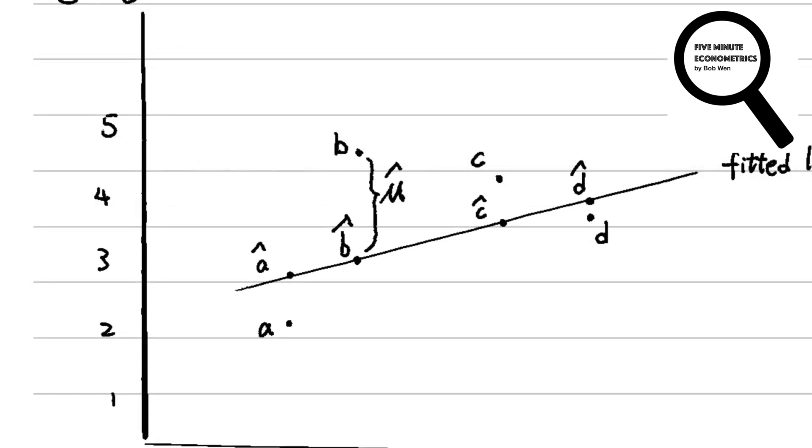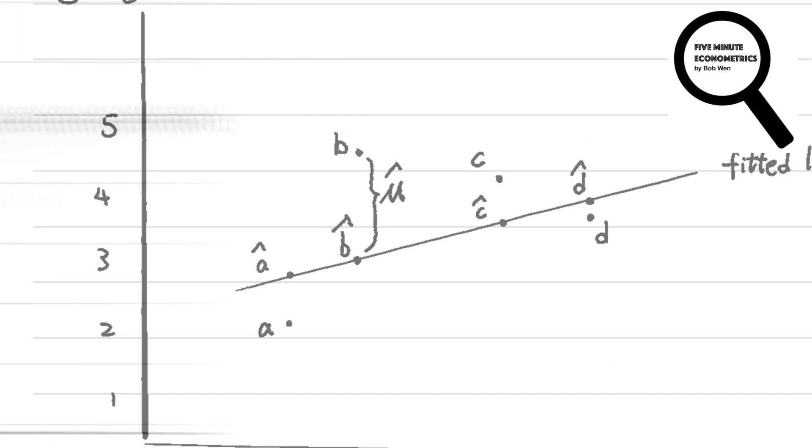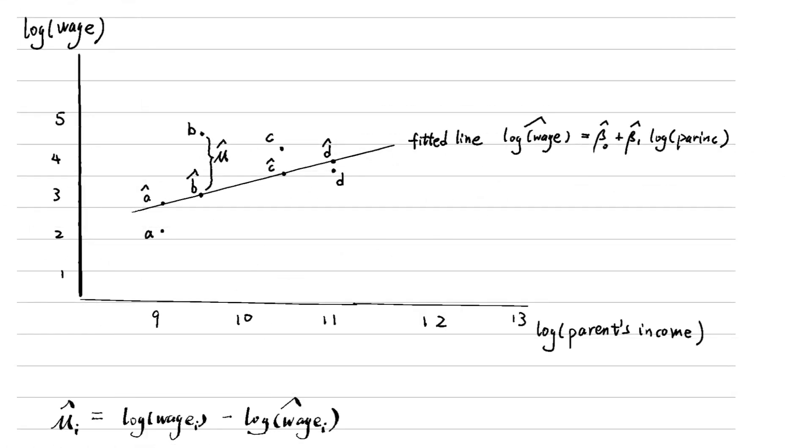The residual mu hat is the difference between the actual and fitted values. Some residuals are positive, like for B and B hat, and some are negative, like for A and A hat.